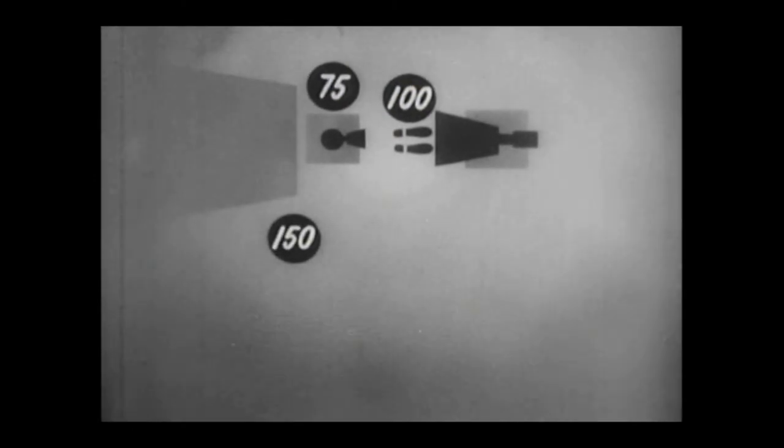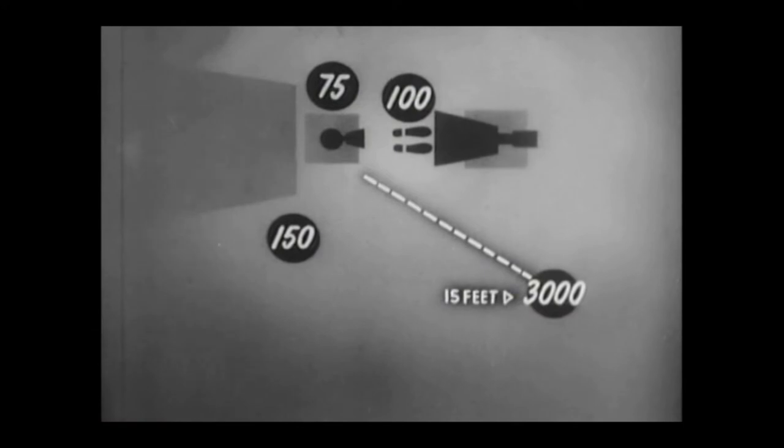A careless person standing beside the tube would exceed safe radiation after only 75 films per week. Standing beside the patient, he would exceed the limits of safe radiation after only 100 films. A careless person standing beside the lead screen could take only 150 films a week before he exceeded three-tenths of a roentgen. Even at a position 15 feet from the x-ray tube, he'd be in danger after 3,000 films.